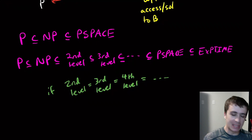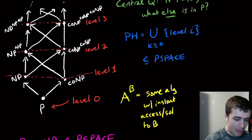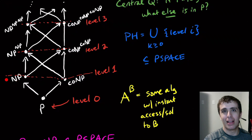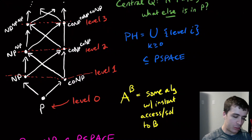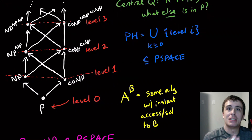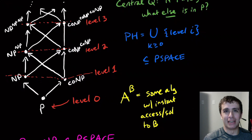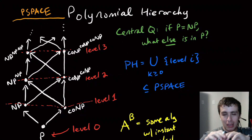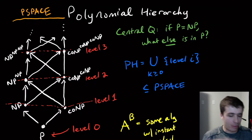We don't believe this is actually the case, because having instant access to solve a SAT formula — doing that polynomially many times — seems like a lot more power than just one call to SAT. But we don't know whether these levels are strict or not. For PSPACE, it's actually equal to calling an oracle to itself, so maybe they're the same, but we just don't know the answer.